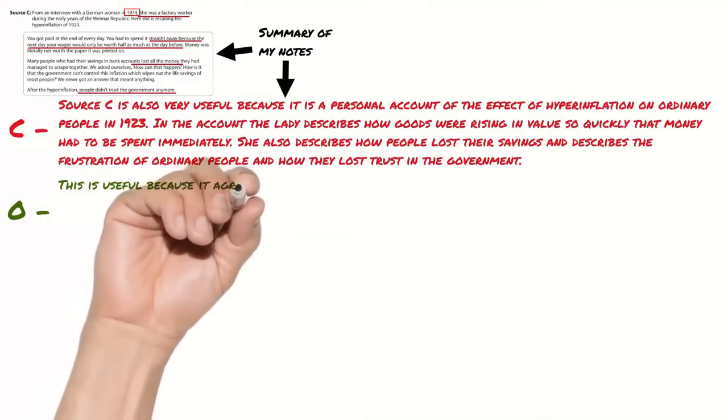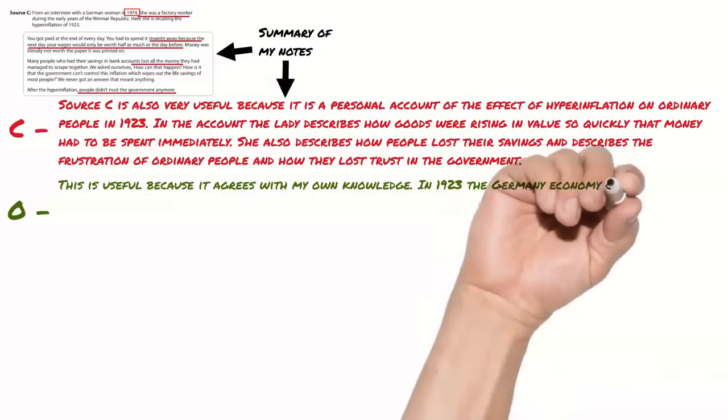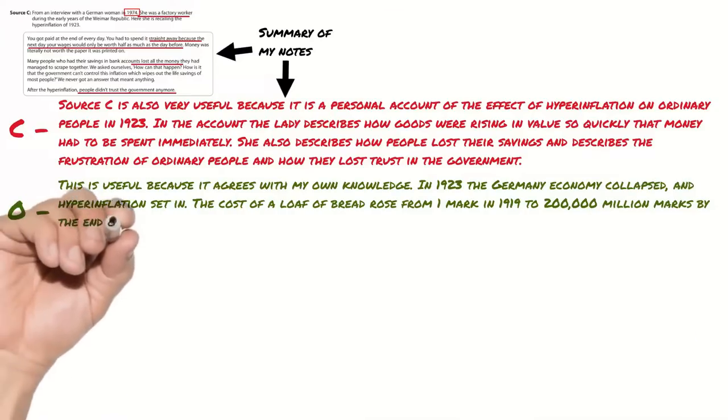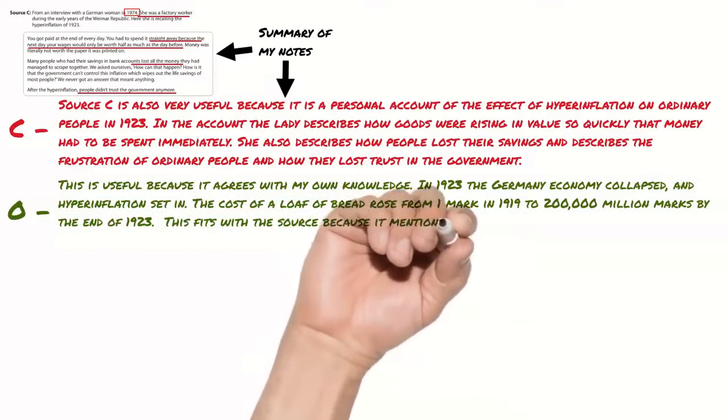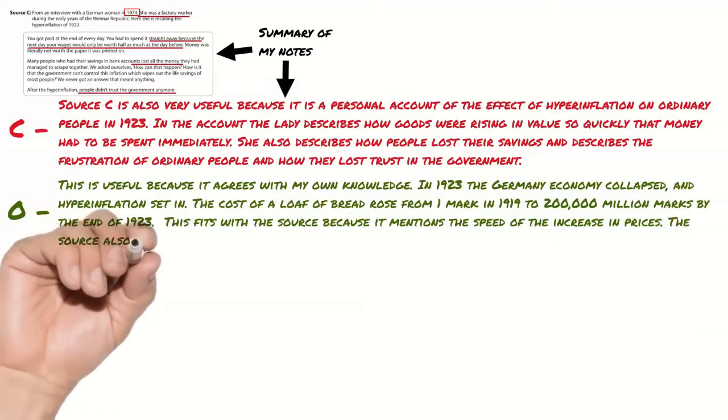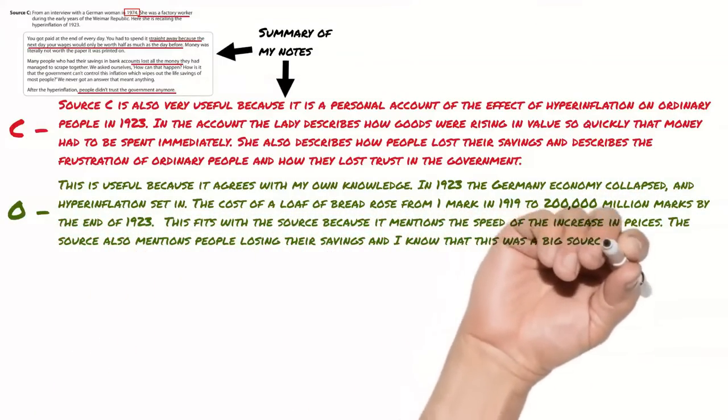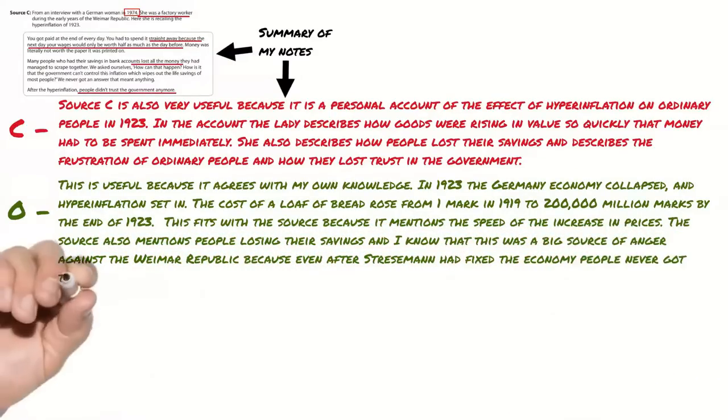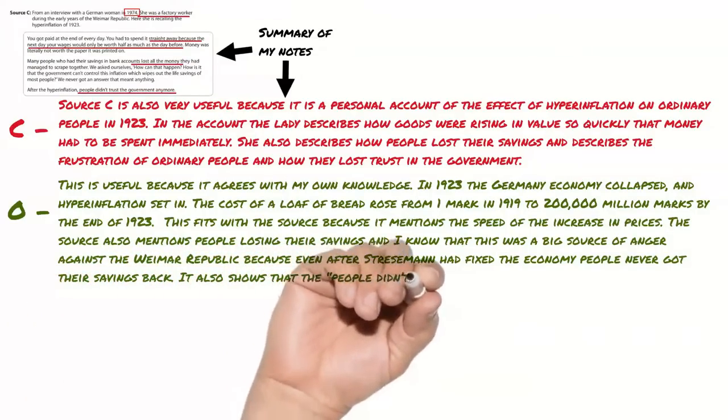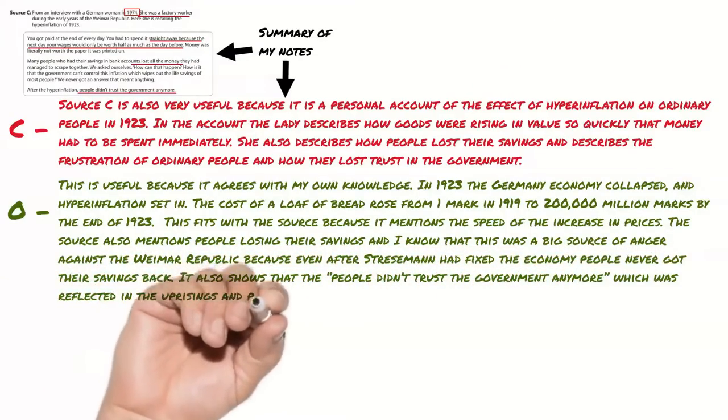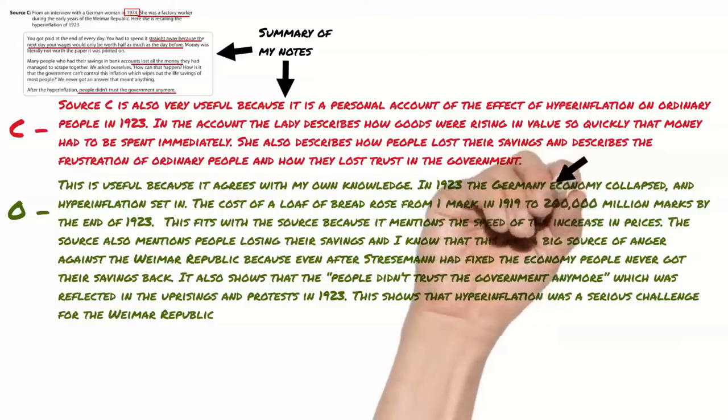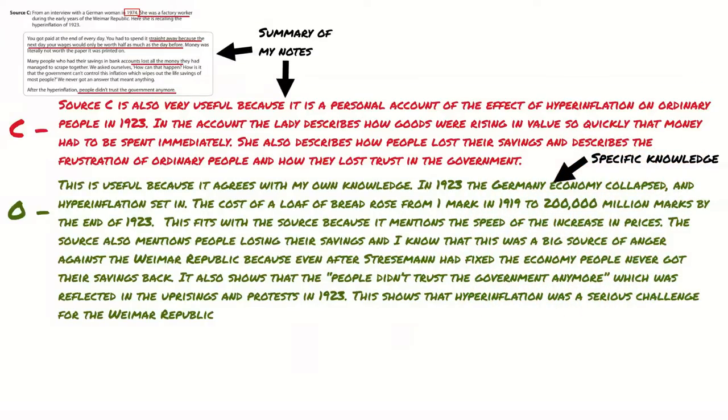This is useful because it agrees with my own knowledge. In 1923 the German economy collapsed and hyperinflation set in. The cost of a loaf of bread rose from one mark in 1919 to 200,000 million marks by the end of 1923. This fits in with the source because it mentions the speed of the increase in prices. The source also mentions people losing their savings and I know that this was a big source of anger against the Weimar Republic because even after Stresemann had fixed the economy people never got their savings back. It also shows that people didn't trust the government anymore which was reflected in the uprisings and protests in 1923. This shows that hyperinflation was a serious challenge for the Weimar Republic. Again you can see I'm using specific knowledge to back up what the source says and I'm linking it to the source and making that mini judgement at the end.